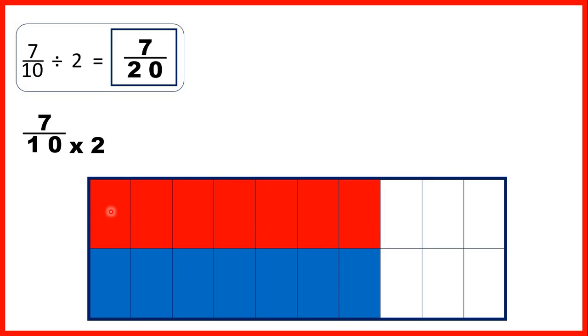So if we color half of what were our 7 tenths in red, you can see that the fraction bar is now split into 20 pieces, and we have 7 of those pieces shaded red, so that's 7 twentieths.